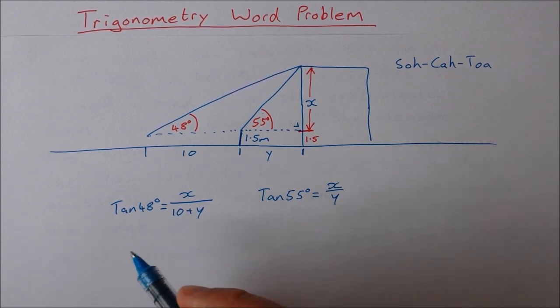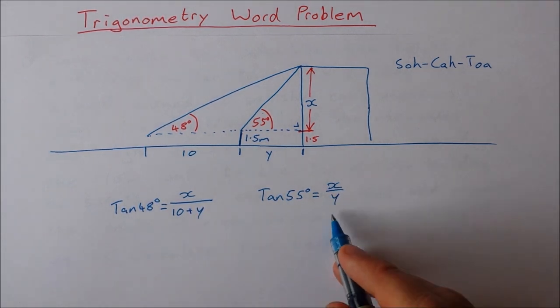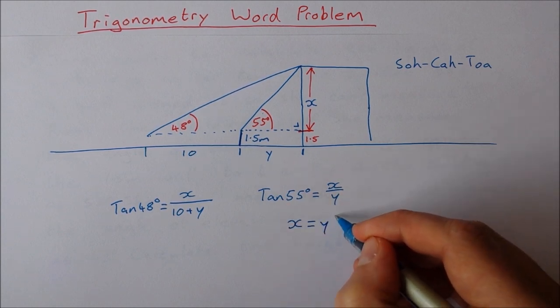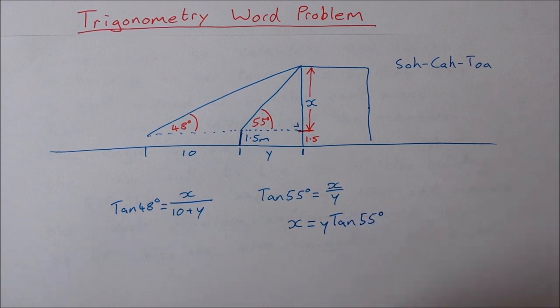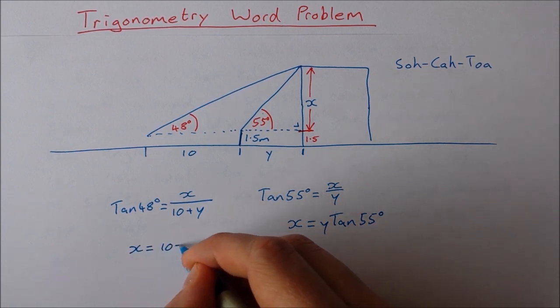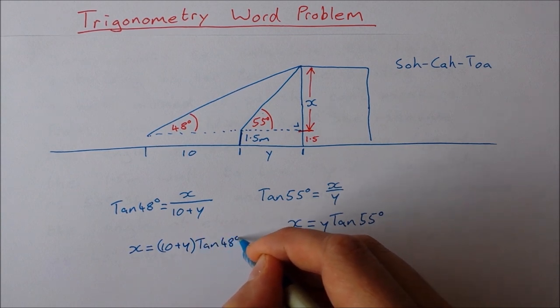What I'm going to do here instead of making simultaneous equations I'm going to isolate x in both of them. So over here I can isolate x easily by saying x is equal to y tan 55 degrees. Over here I multiply across by 10 plus y. So x is equal to 10 plus y times tan of 48 degrees.